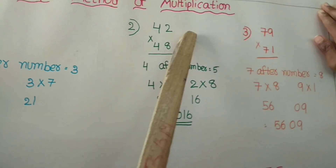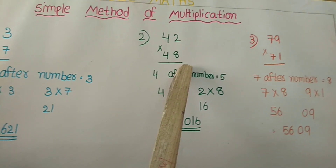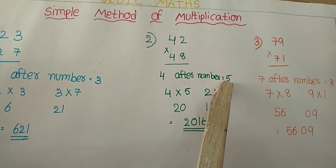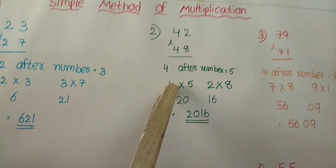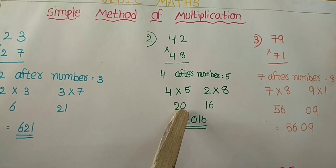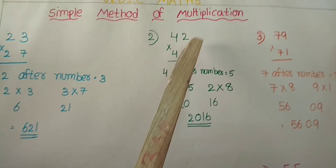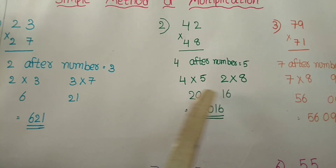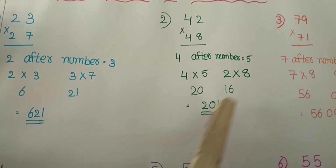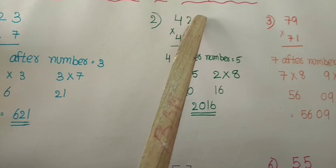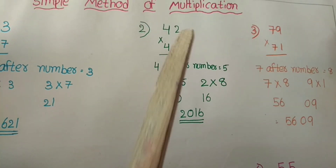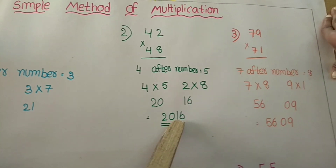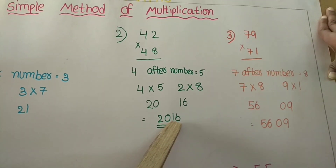Some more examples. 42 into 48. The tens digit 4, the next number is 5. 4 into 5 is equal to 20. The units digit multiplication: 2 into 8 is equal to 16. So the answer is 2016. 42 into 48 is equal to 2016.